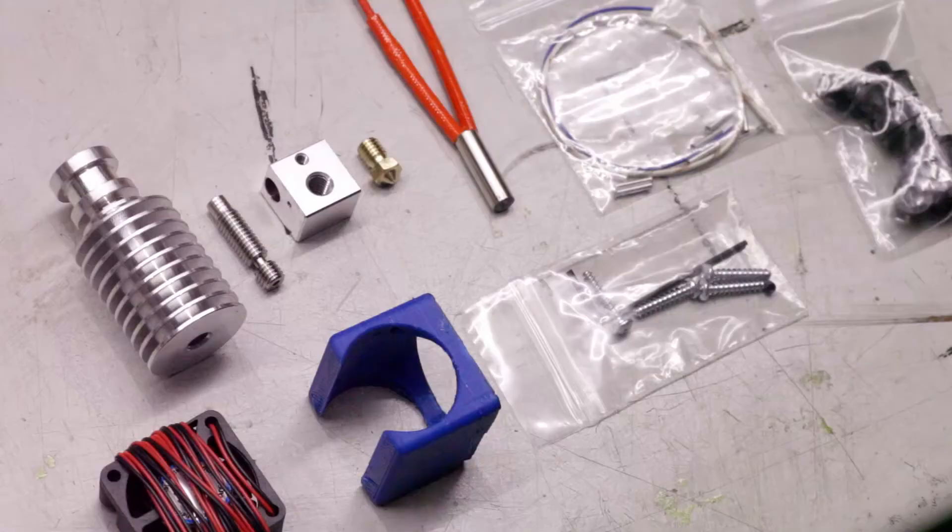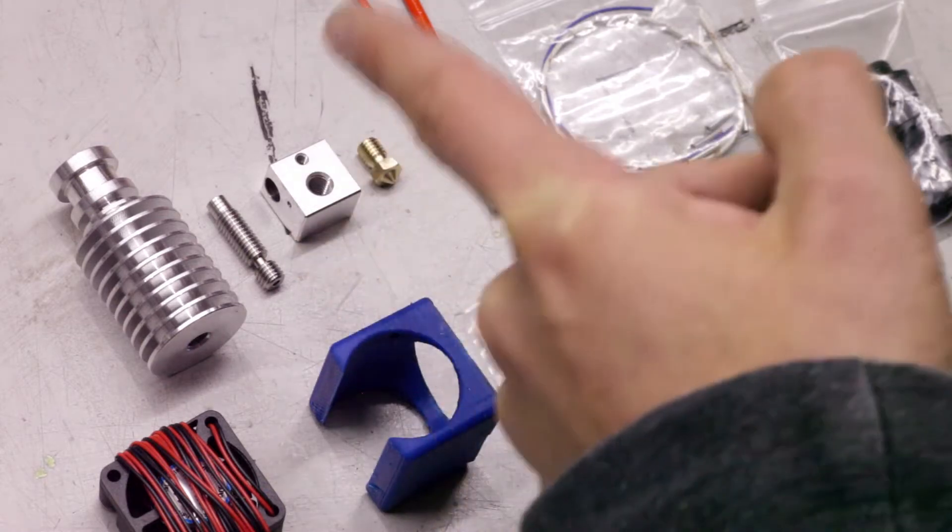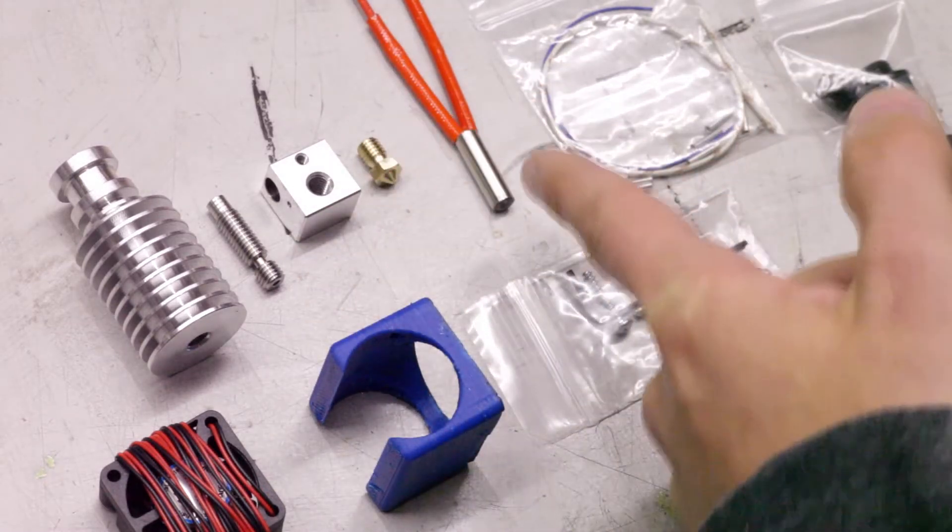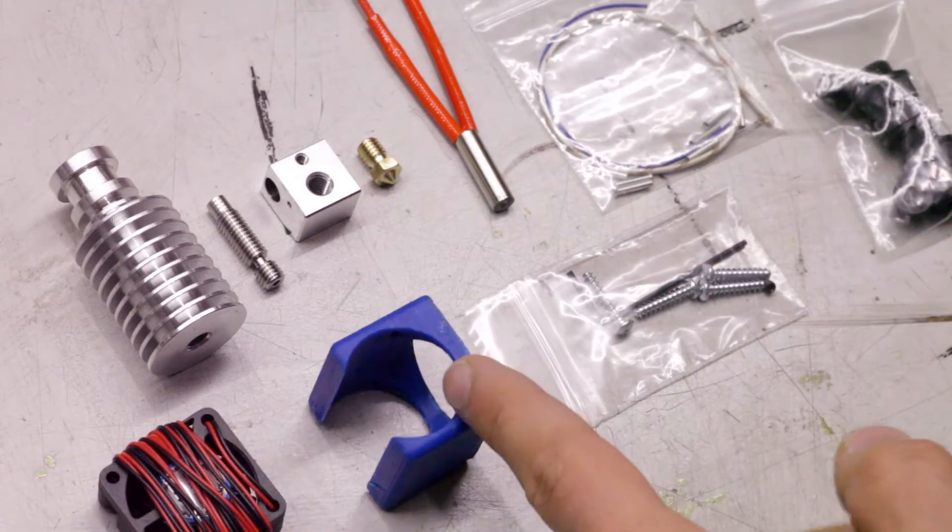When you order an E3D, you're going to get a kit with all the parts you need. You'll get the heatsink, the heatbreak, the heater block, a nozzle, a heater cartridge, a thermistor with some parts for assembly, a fan with a fan shroud and some screws and Kapton tape.